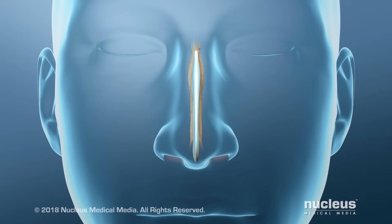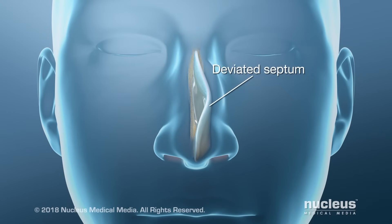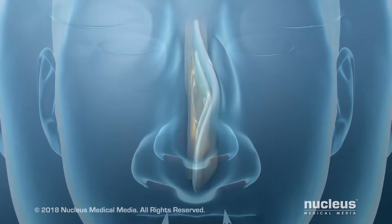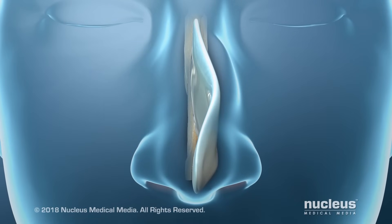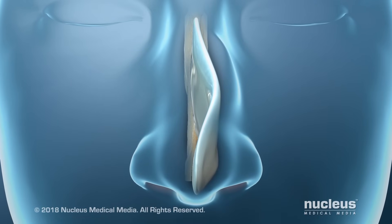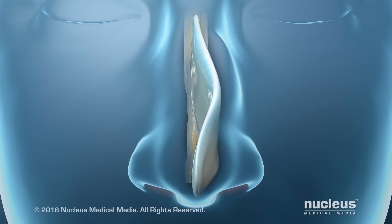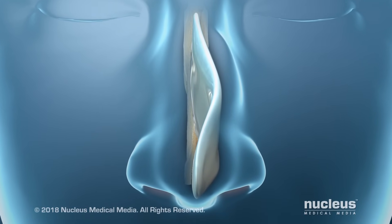If you have a deviated septum, your septum is bent instead of straight. A deviated septum can block airflow through your nose. The procedure to fix problems with your nasal septum is called a nasal septoplasty.